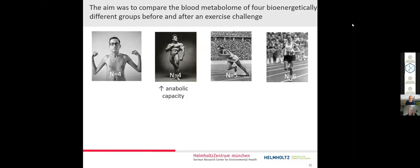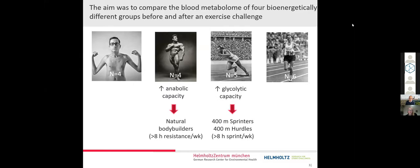The first group was a group that has a high anabolic capacity, so a high capacity to build up muscle mass. Those were natural bodybuilders training for over eight hours of resistance exercise per week. The second group were 400-meter sprinters and 400-meter hurdles runners training for over eight hours of sprint or speed training per week and have a high glycolytic capacity.